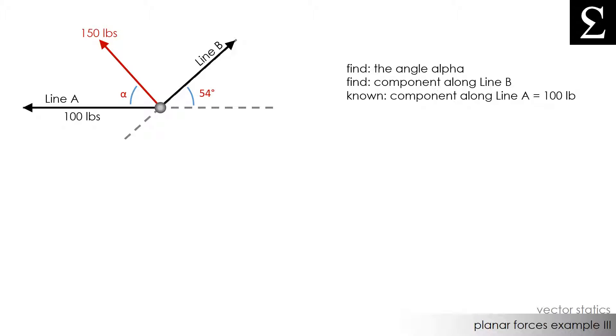To start off, we can begin by redrawing the single vector of 150 pounds. If we already know that the component of this force acts along line A and is 100 pounds, we can draw that like so. We also know that this angle here is alpha.